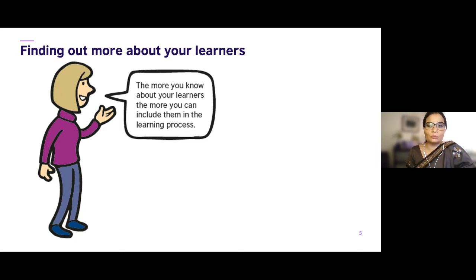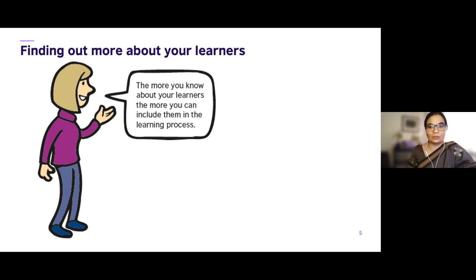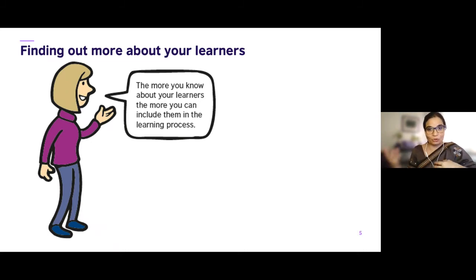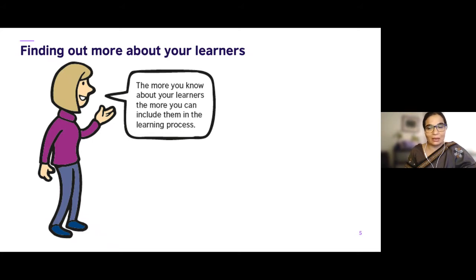How can you find out more about your learners? The more you know about your learners, the more you can include them in the learning process. What are the ways in which you can find out about your learners? For example, you can talk to other teachers — if you're teaching Hindi, you can talk to the English teacher. If you're a primary teacher, it might be a good idea to talk to parents or the sports teacher. Some responses coming in: by watching their behavior — that's a very good point. By tests and interaction, by seeing children and talking to them.